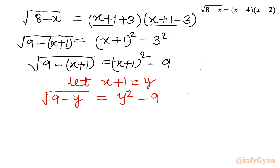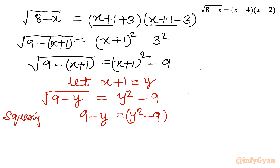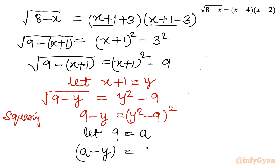Squaring both sides gives: 9 minus y equals (y squared minus 9) squared. Now I will use one more substitution — let 9 equal a. So the equation becomes: a minus y equals (y squared minus a) squared.